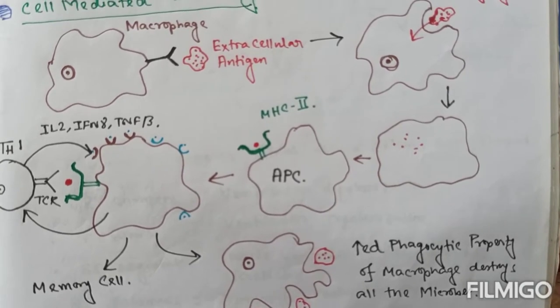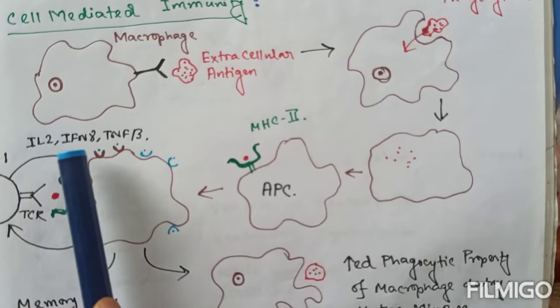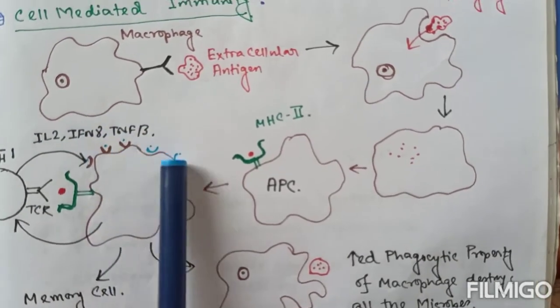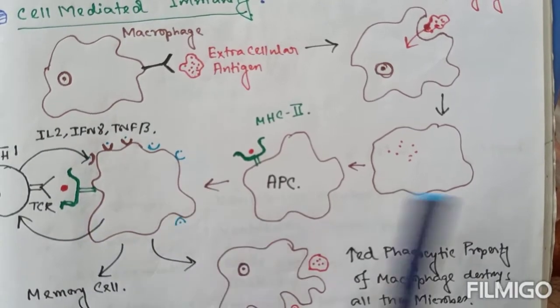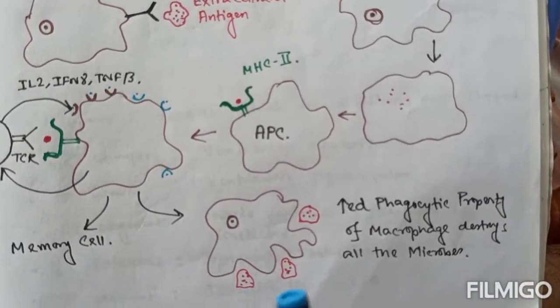And soon macrophage gets signal from helper T-cell like in the form of interleukin-2, interferon-gamma, tumor necrosis factor beta, which makes the macrophage more active and to be proliferated.